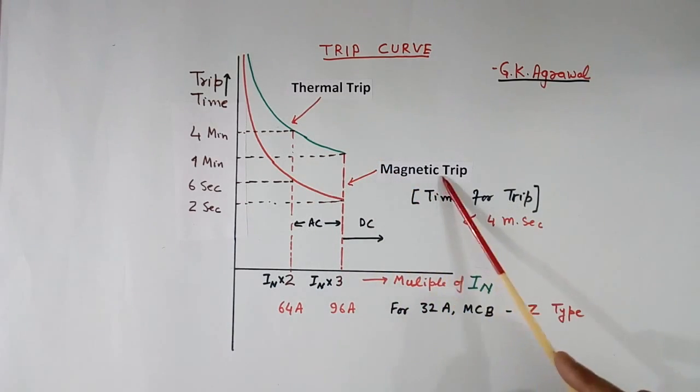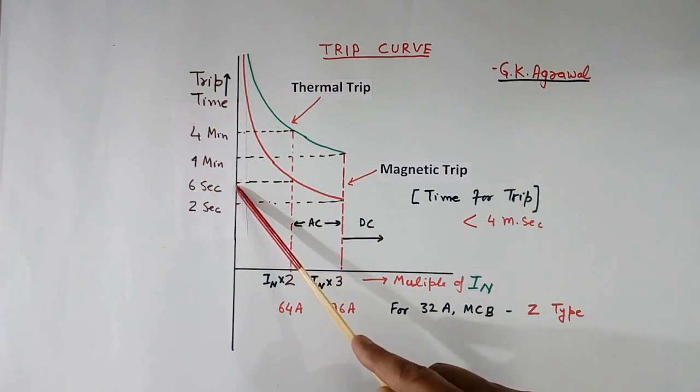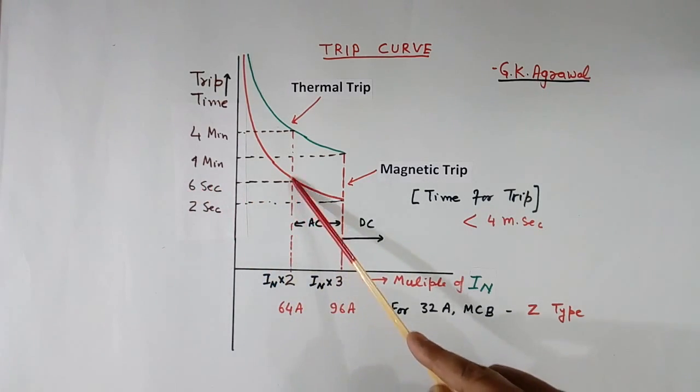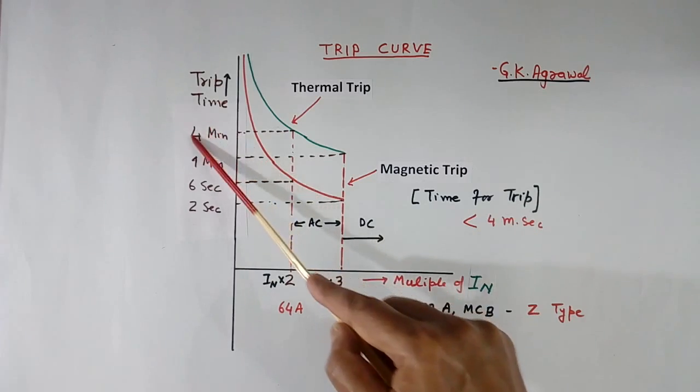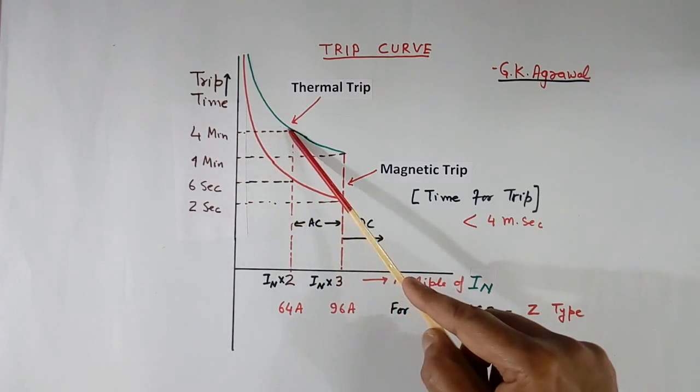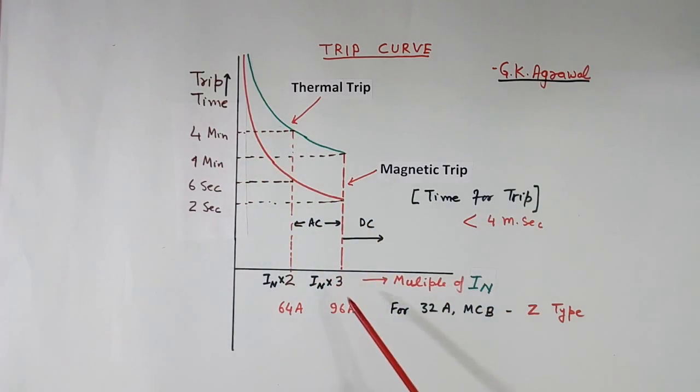And this is magnetic trip line. Now suppose double current flows, means for 32 ampere breaker, 64 ampere current flows. Then trip time can be 6 seconds to 4 minutes, anything. 4 minutes is maximum, worst case.